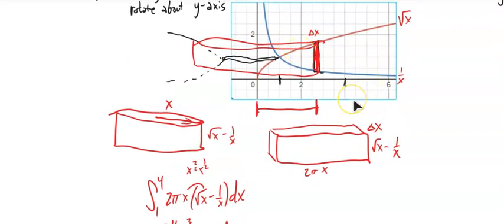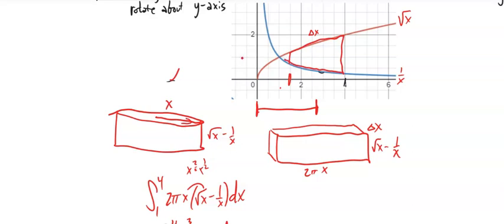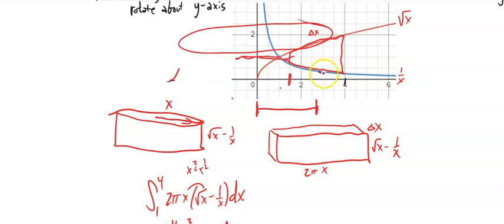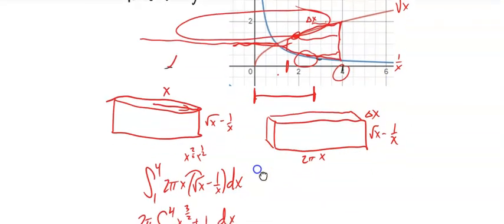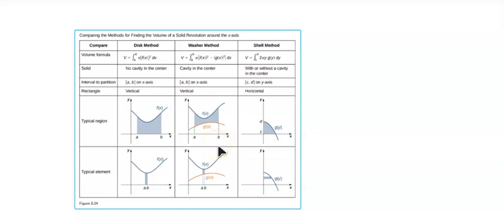Notice that using the cylinder method here was pretty easy. If we had to do this one using disks, that would be a bear, because we'd have to think about consecutive disks looking down on it, then break it up into parts — this part gives washers where you have this minus that, and then you'd have to break it up again and do washers based on the other line. It's substantially more work. Your text has a nice table, Figure 2.3.4, about how to choose which method to use — it comes down to making a good choice to reduce computational error.